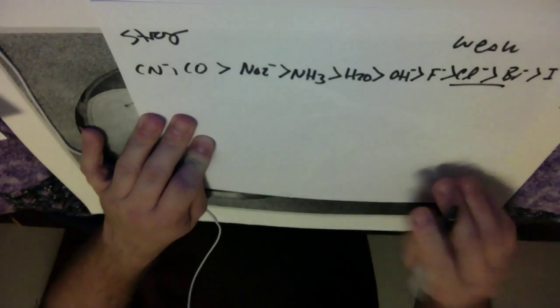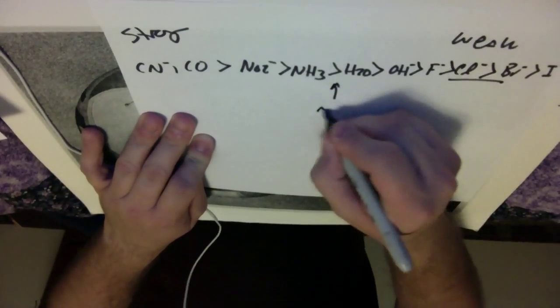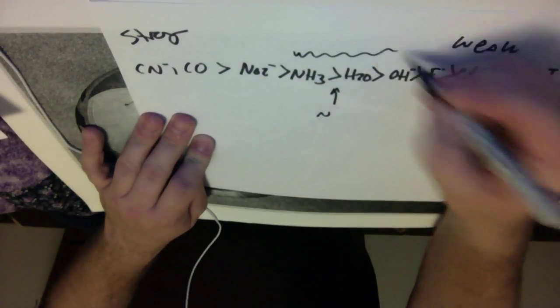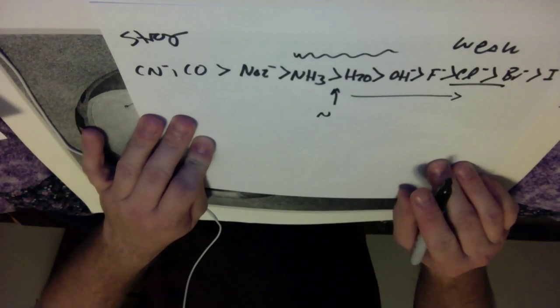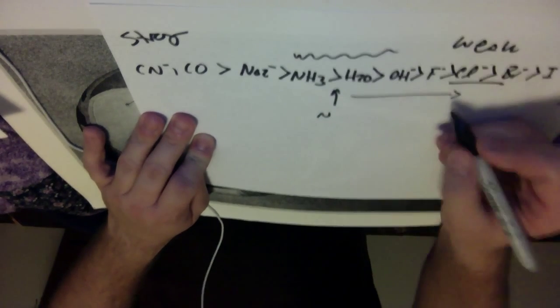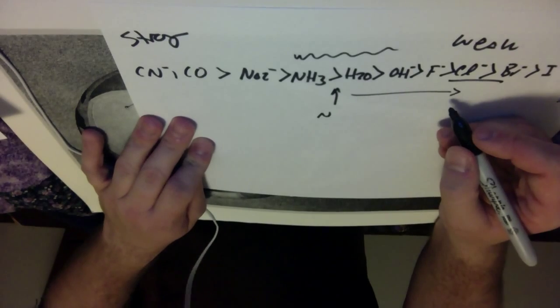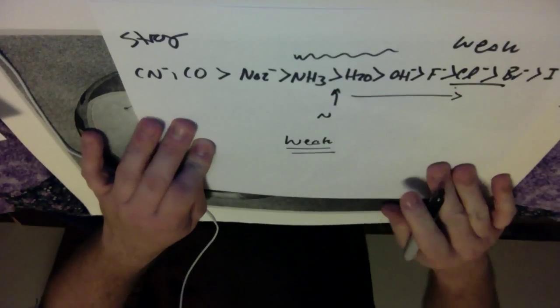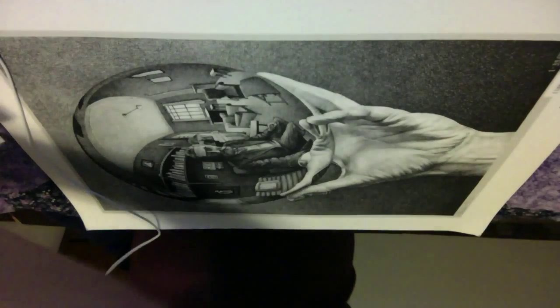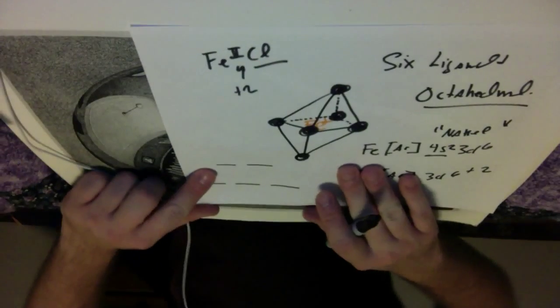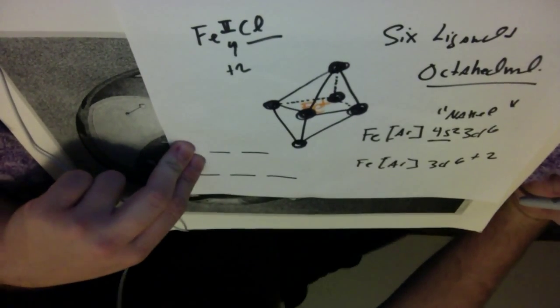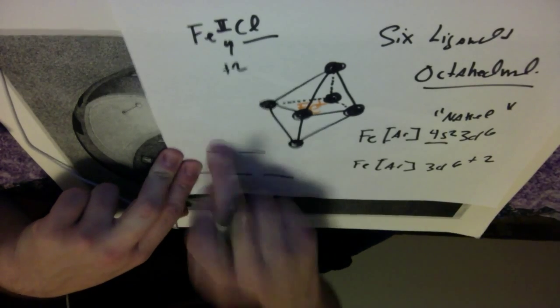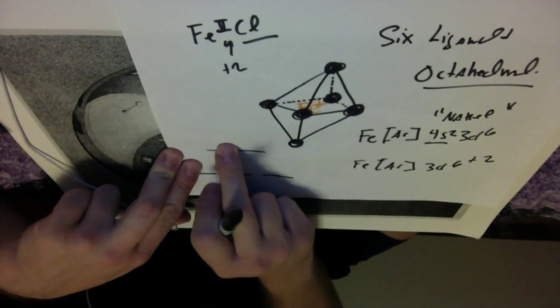So chlorine is going to be over here, and I said right about approximately here is where I have my strong and weak field. You know, you've got a little gray area here. So this is clearly way over here. So it's a pretty good case that iron 2 chloride, we're talking about chlorine, is overall going to have a pretty weak field. So with that in mind, let's just see how the electrons would go in. So this is a weak field, right?